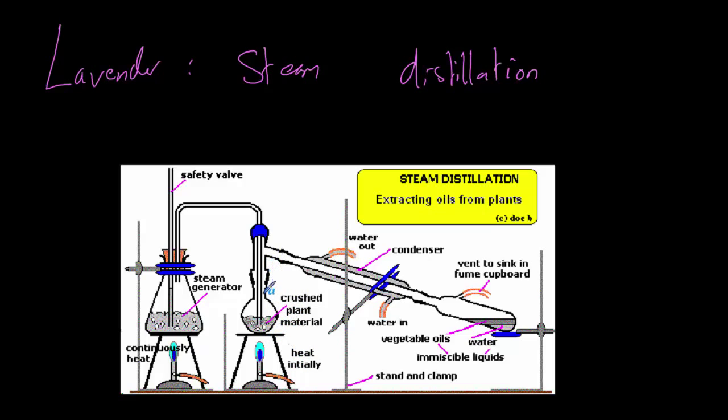And so what we do is we heat our boiled plant material, and the oil will actually evaporate at around about the same temperature as water. And so both of those will run through this condenser. We have here in red our lavender oil and water. Now because oil and water are very different substances, if you leave them on their own they will separate.